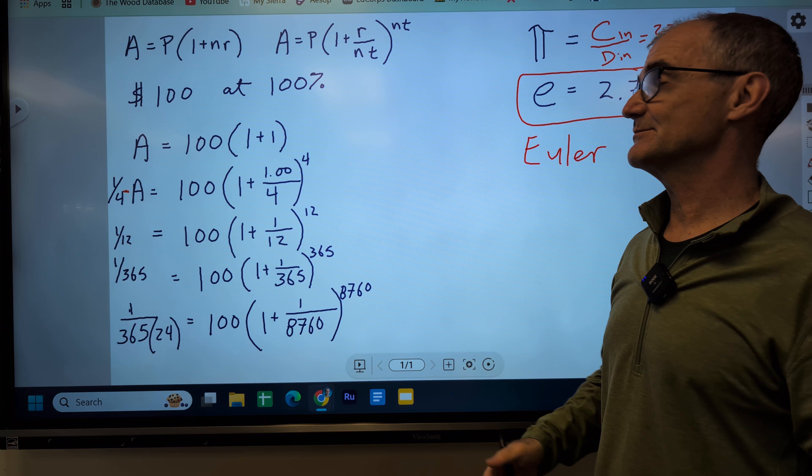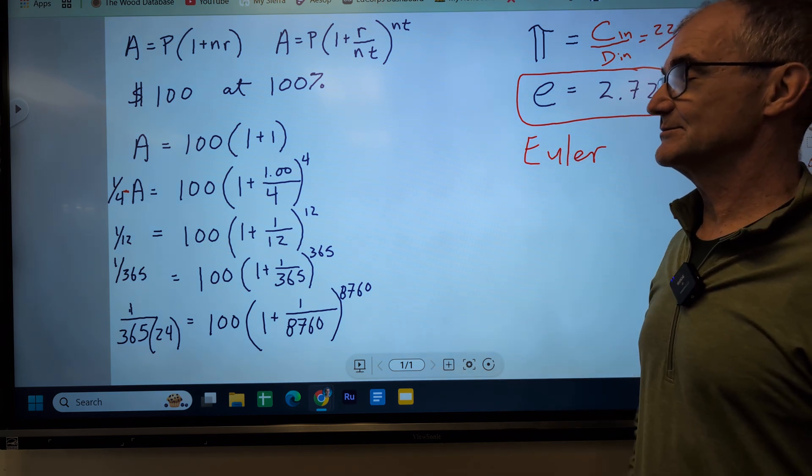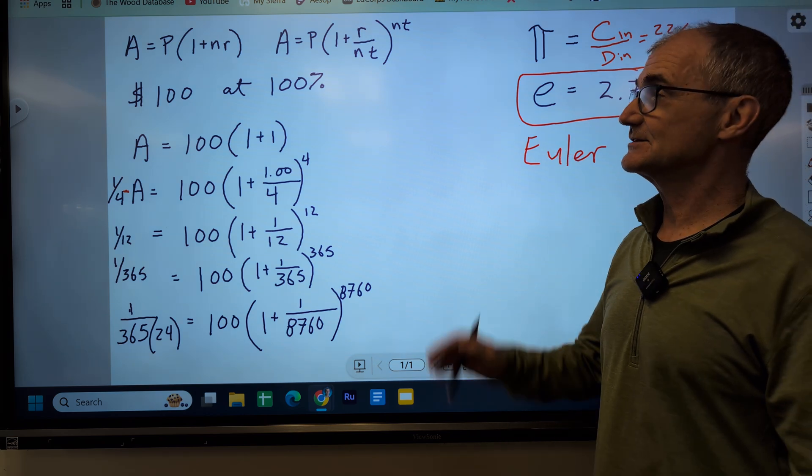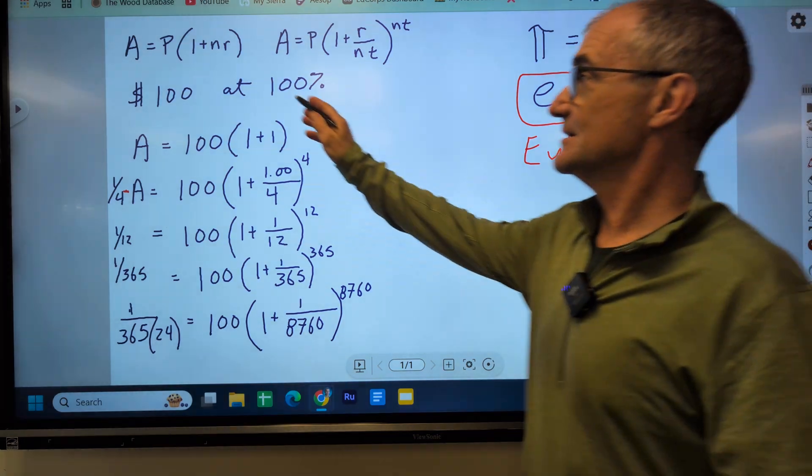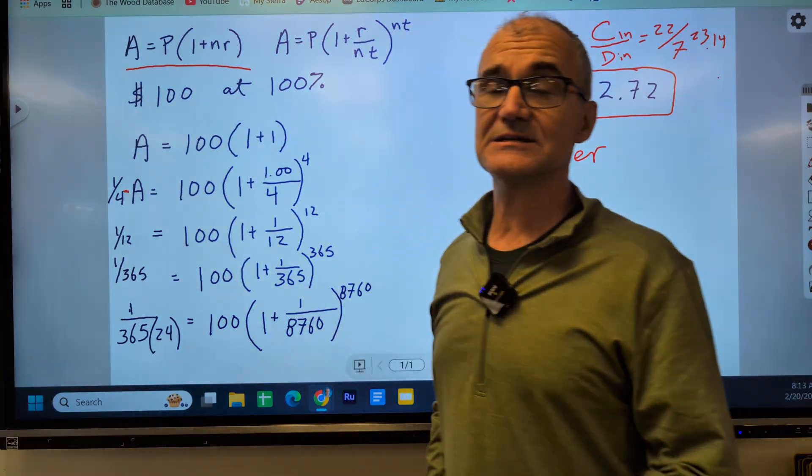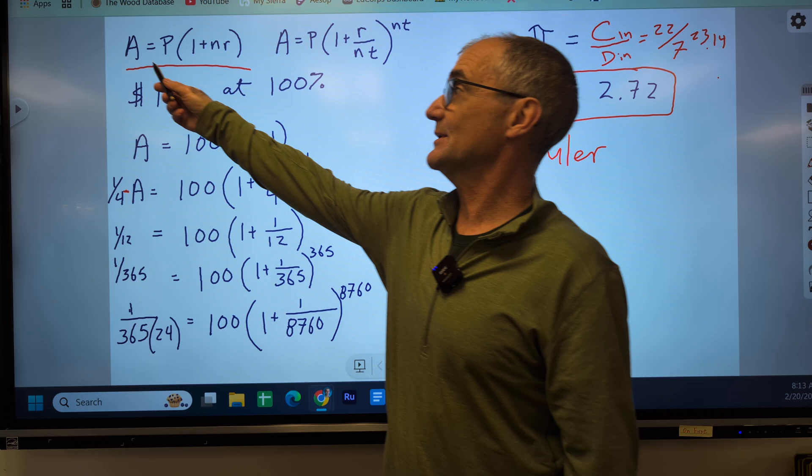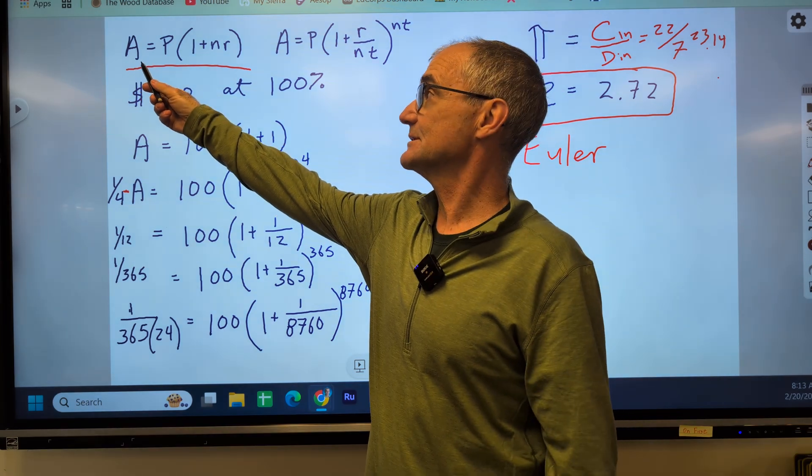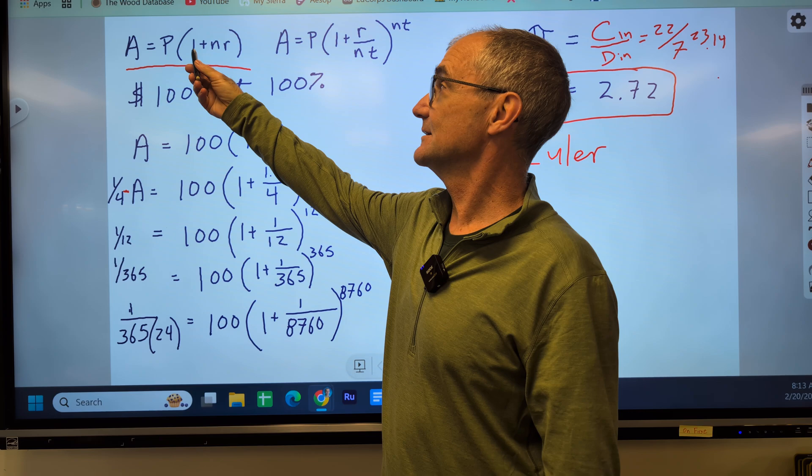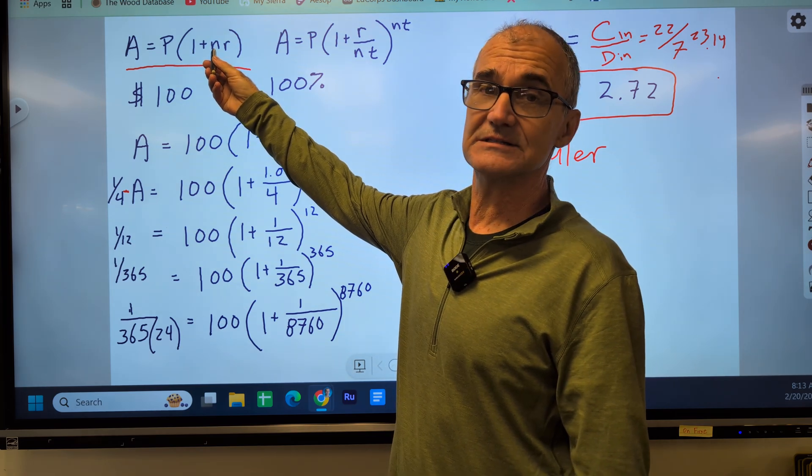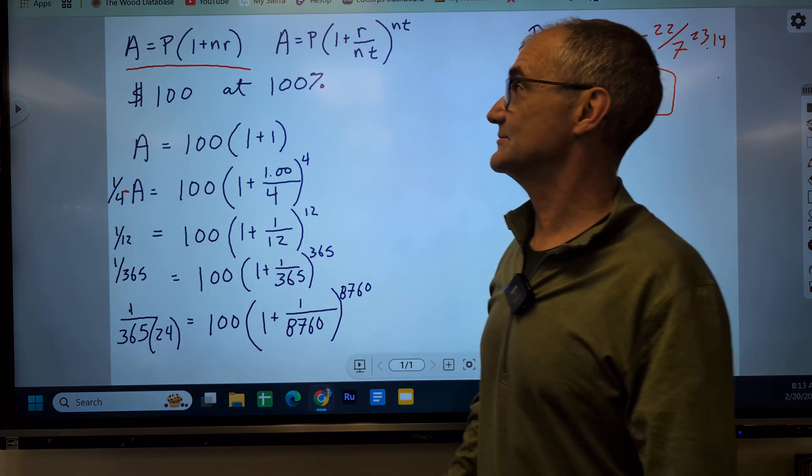All right, so let's start with interest here. We have two equations for interest. This one right here is called simple interest. A is the amount you will have afterwards. It equals the principal, the amount you put in the bank, times 1 plus the number of periods N times the rate of interest R. That's simple interest.